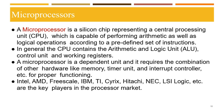Next, we will discuss the microprocessor. A microprocessor is a silicon chip representing a central processing unit capable of performing arithmetic as well as logic operations according to a predefined set of instructions specified by the manufacturer. In general, the CPU contains the arithmetic and logic unit (ALU), control unit, and working registers. A microprocessor is a dependent unit and requires the combination of other hardware like memory, timer unit, and interrupt controller for proper functioning. Intel claims credit for developing the first microprocessor, the Intel 4004, a 4-bit processor released in November 1971.